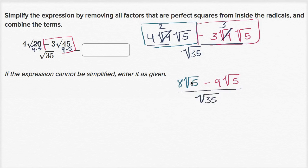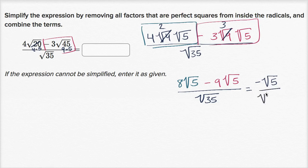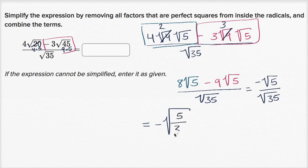If I have eight of something and I subtract nine of that something, I'm going to have negative one of that something. So I could say negative one times the square root of five, or just negative square root of five over the square root of 35. I can simplify this even more — this is equal to the negative of the square root of five over 35.